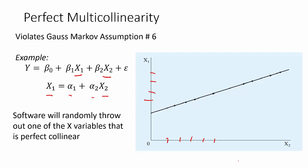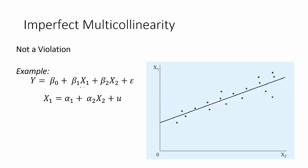The other issue could be imperfect multicollinearity. Now that's not a violation of our Gauss-Markov Assumption, but it is a problem. So we'll look at that same example, where we have x1 and x2. x1 is a function of x2, but not a perfect function.